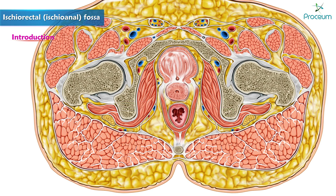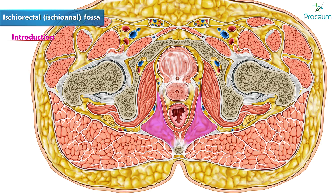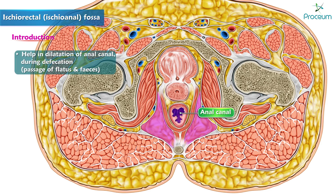This fossa is occupied primarily with fatty tissue surrounding the anus and the urogenital hiatus. The two fossae communicate with each other behind the anal canal. They help in dilation of the anal canal during defecation, i.e. passage of flatus and feces.